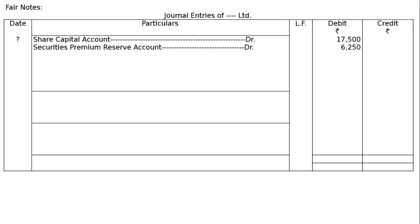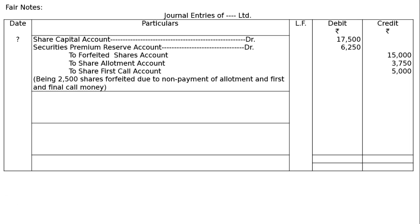Credits for the forfeiture entry: To Share Forfeiture Account Rs. 15000 (amount forfeited from Gaurav). To Share Allotment Account Rs. 3750 (allotment amount not received, per Working Note 2). To Share First Call Account Rs. 5000 (2500 shares × Rs. 2 per share). Narration: Being 2500 shares forfeited due to non-payment of allotment and first and final call money.